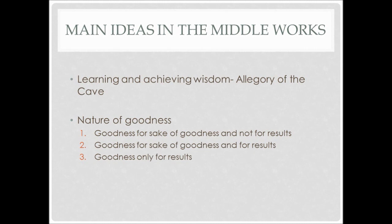One of the last major ideas of the middle works is the nature of goodness. According to Schindler, the Republic states that there are three manifestations of goodness: the first is goodness chosen for the sake of goodness and not for its results; the second is goodness for its own sake and for the sake of its results; and the last is goodness chosen only for its results. These manifestations make up the nature of goodness, which Plato believed to be the foundation of truth, the cause of all existence, and the goal of all human nature.